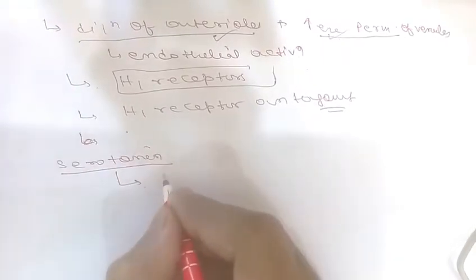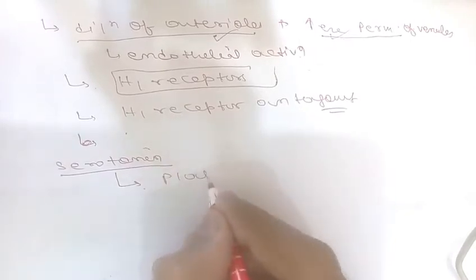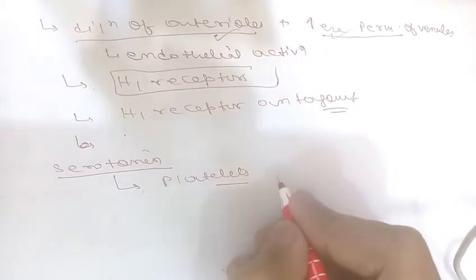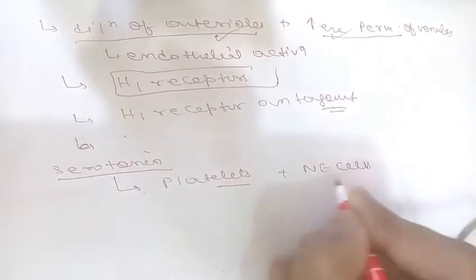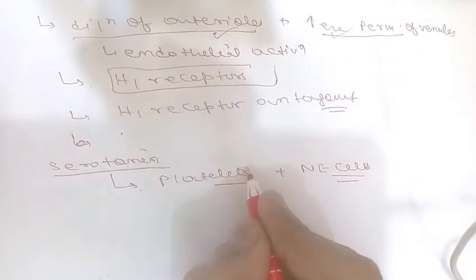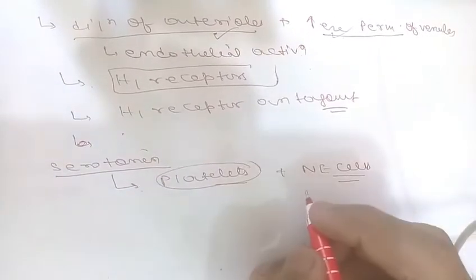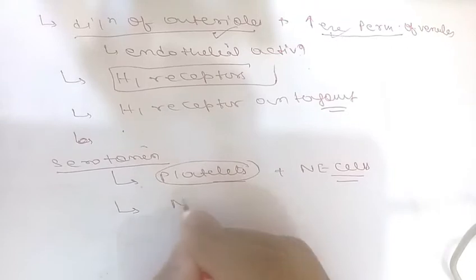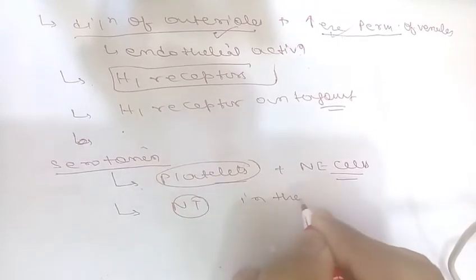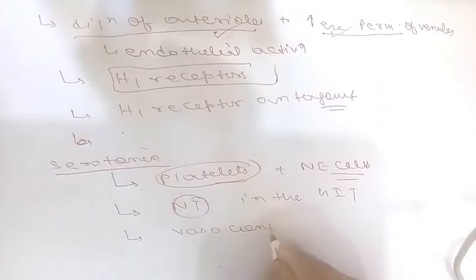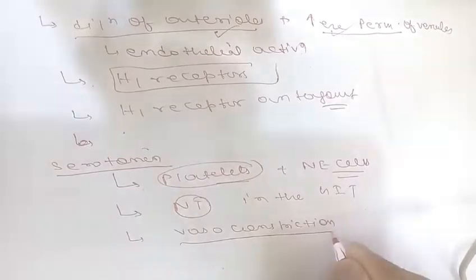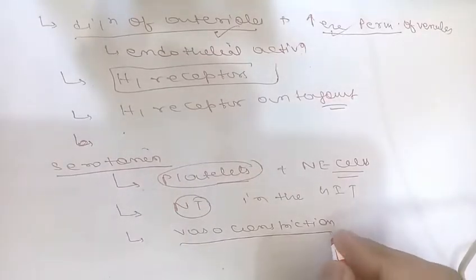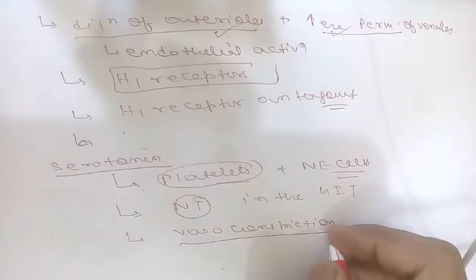The next vasoactive amine is serotonin, also known as 5-hydroxytryptamine. It is a preformed vasoactive mediator present mainly in platelets and certain neuroendocrine cells in the GI tract. Its primary function is as a neurotransmitter in the GI tract, and it is also a vasoconstrictor.